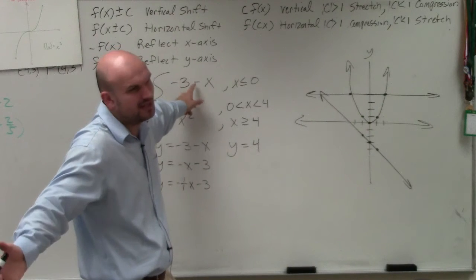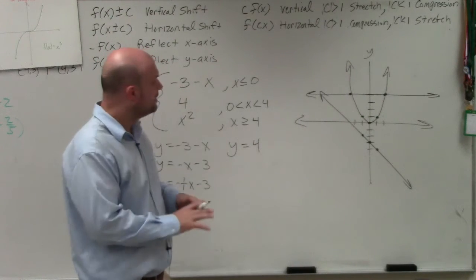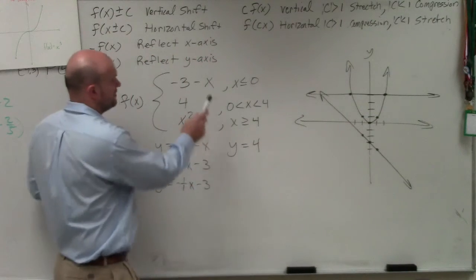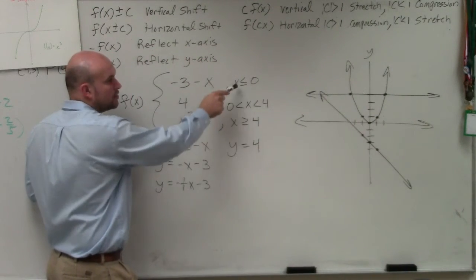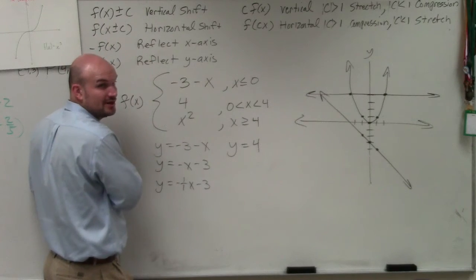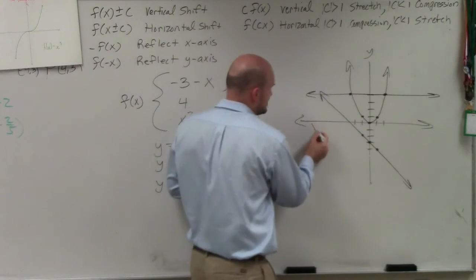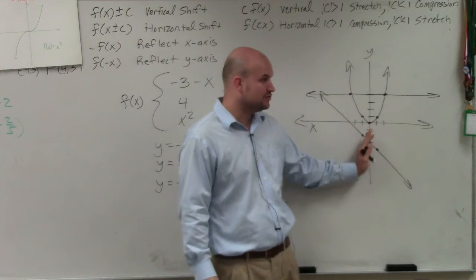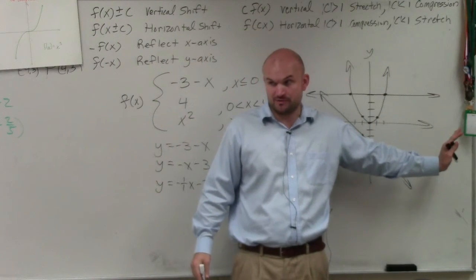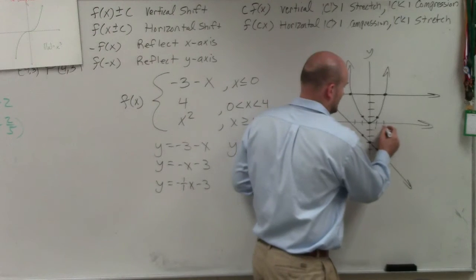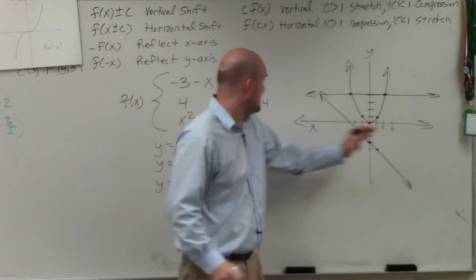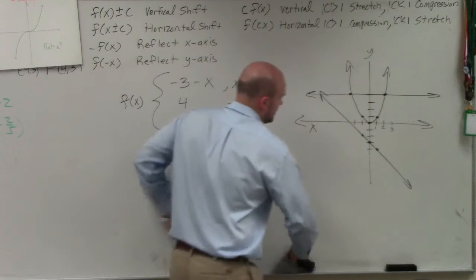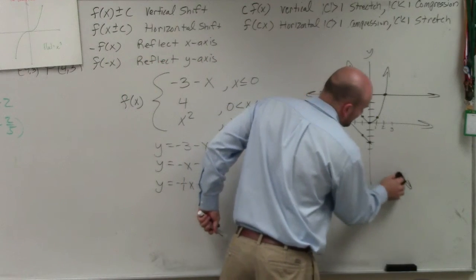Now let's just follow the constraints. This one says only graph when x is less than or equal to 0. Here's the x-axis. The x values are greater than 0 to the right of the y-axis. Would everybody agree with me? So that's 1, that's 2, that's 3. So since these x values are positive, they don't fall within that constraint. So I'm going to erase them.